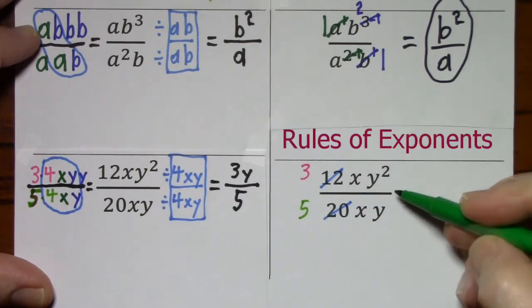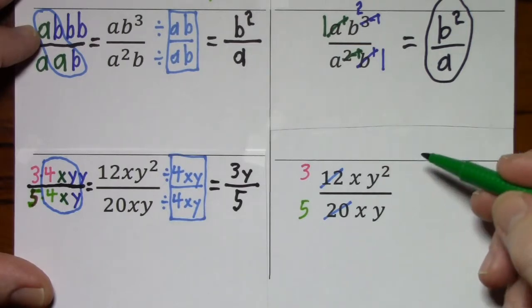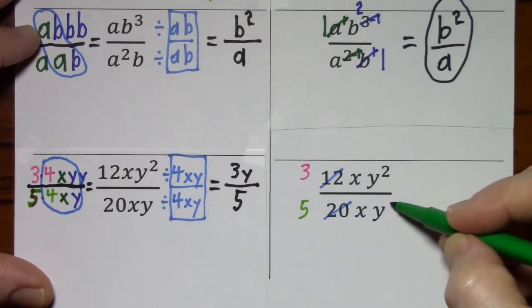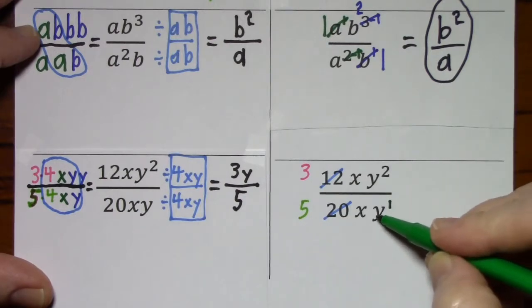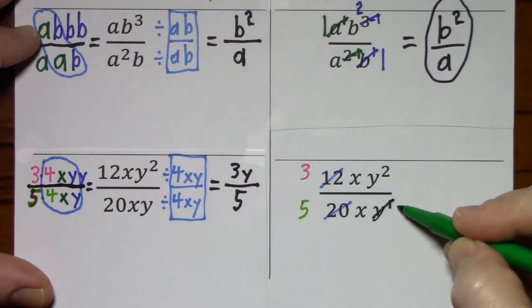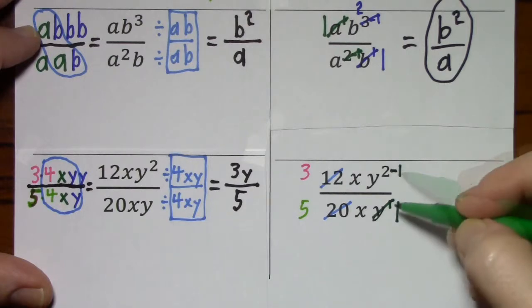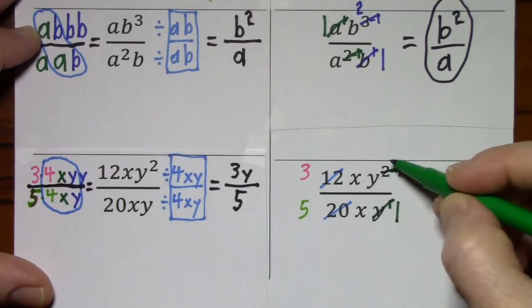Using the rules of exponents, we'll start with the y's just because that's going to be a little easier to explain. If dividing the same base, in this case y. You look at the exponents. This y is y to the first power. Using the rules of exponents, I can cross this out. Effectively, it all becomes a 1 if I subtract the exponent from the other y term. And 2 minus 1 is 1.